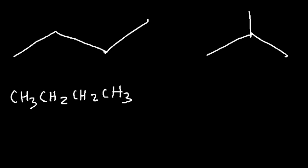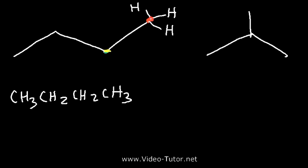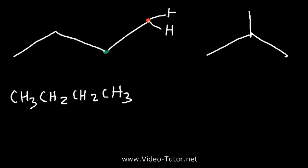If you're not sure how to get that, keep in mind carbon likes to form four bonds. This carbon at the end is attached to one of the carbons so it only has space for three bonds, which means there are three hydrogens attached to it. The carbon in the middle is attached to two other carbon atoms, so we need to add two bonds to get to four. So the ones in the middle are CH2s, the ones at the end are methyl groups or CH3s. This is the condensed structure of butane, which is C4H10.